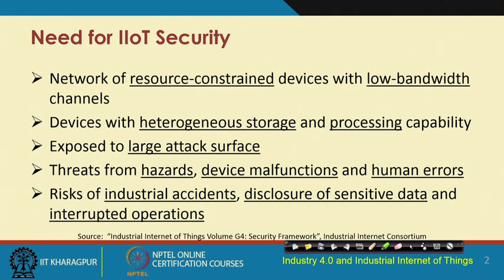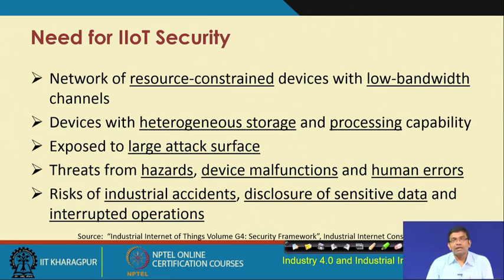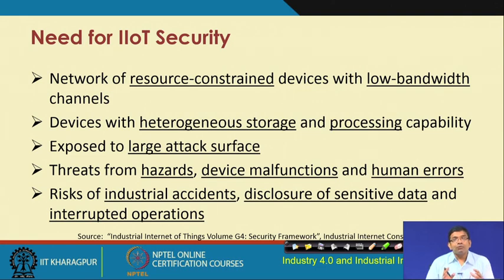IoT devices are energy-constrained, processing-power-constrained, buffer-constrained, and resource-constrained with respect to all kinds of computational resources. These devices also operate in low-bandwidth wireless channels. The different types of wireless communication applicable for IoT are characterized by their own different features, and each poses its own vulnerabilities which, if unaddressed, could lead to security attacks.